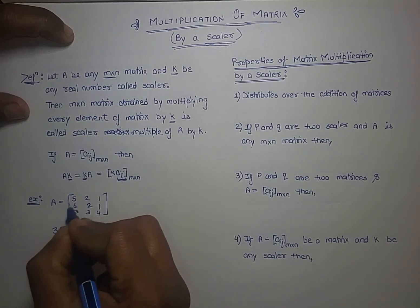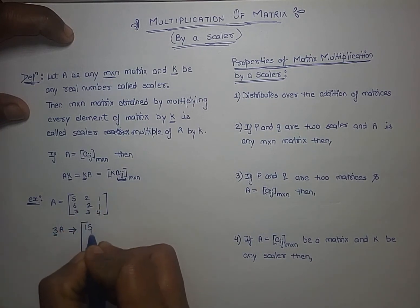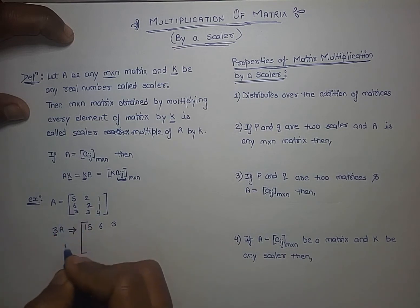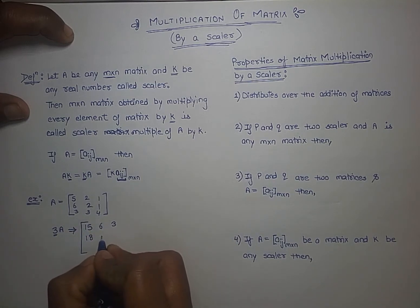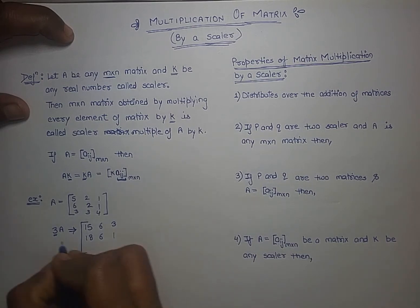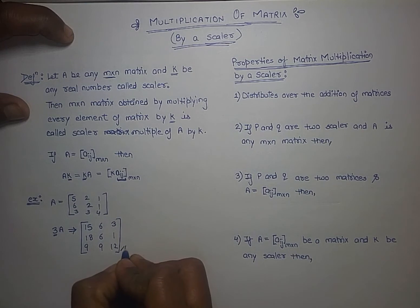So we multiply: 3×5=15, 3×2=6, 3×1=3, 3×6=18, 3×2=6, 3×1=3, 3×3=9, 3×3=9, and 3×4=12. This is the result of scalar multiplication.